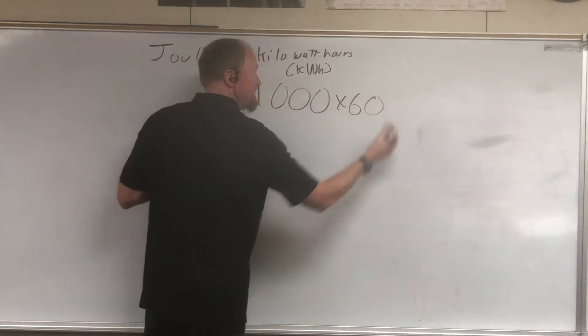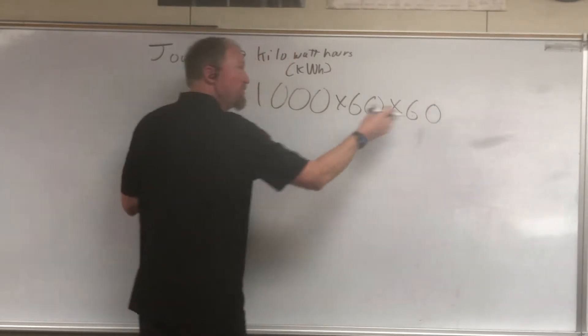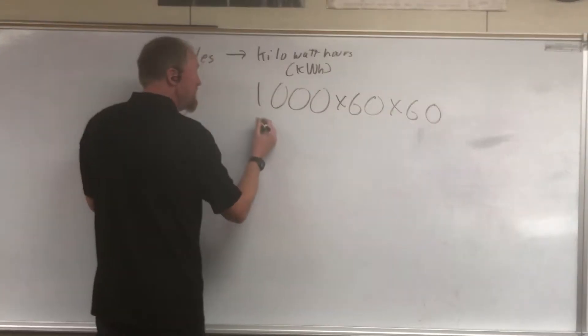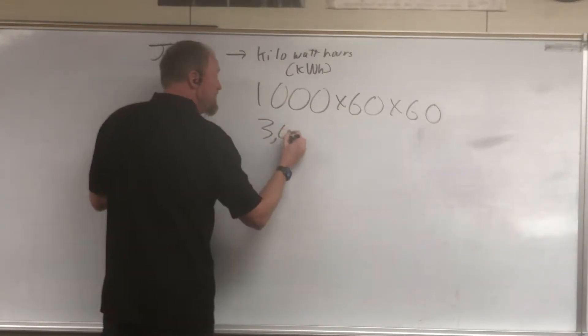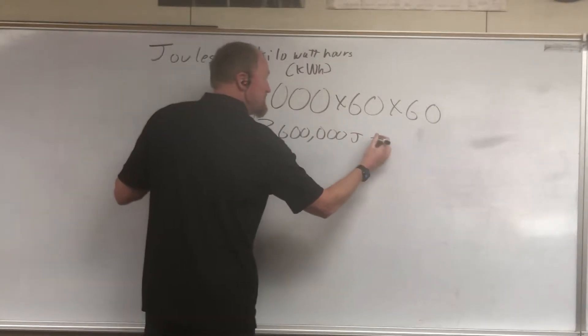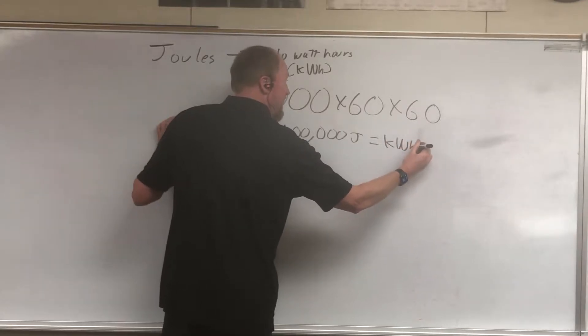There are 60 seconds in a minute and 60 minutes in an hour for a total of 3600 seconds an hour. So you just multiply it all together and you get 3,600,000 joules is equal to one kilowatt hour.